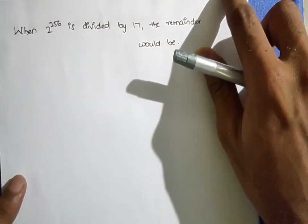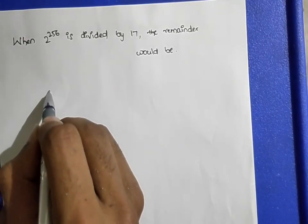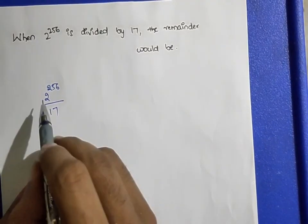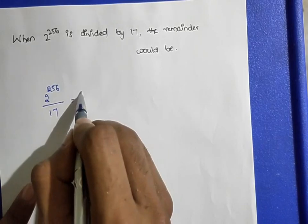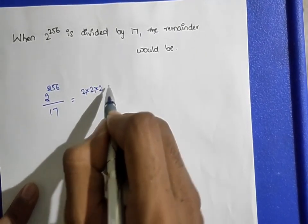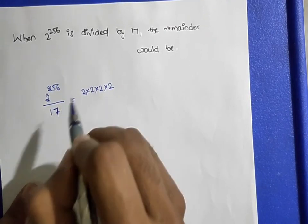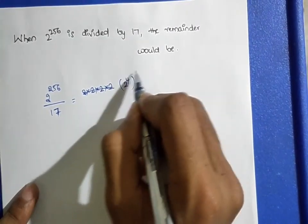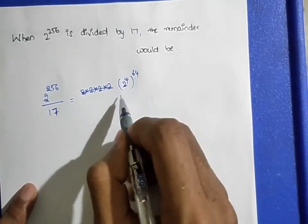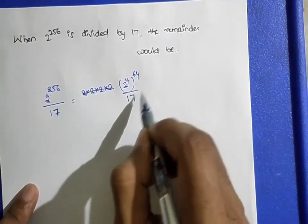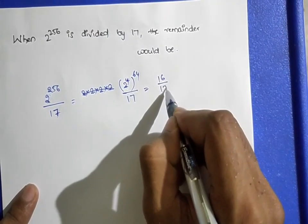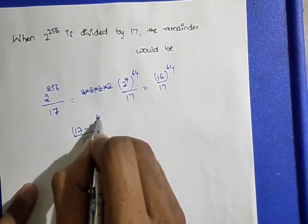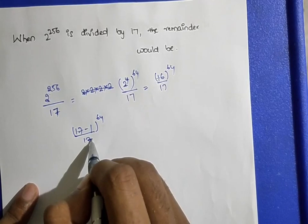When 2 power 256 is divided by 17. Notice that 2^1=2, 2^2=4, 2^3=8, 2^4=16, and 16 = 17 − 1. So write 2^256 = (2^4)^64 = 16^64 = (17 − 1)^64 / 17. Since 64 is even, remainder is +1, but 16 gives remainder 16.